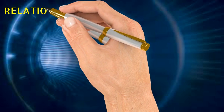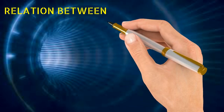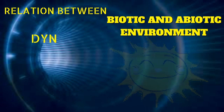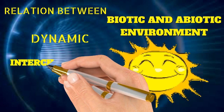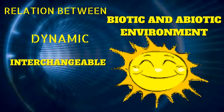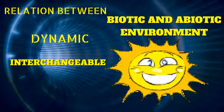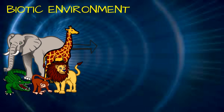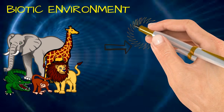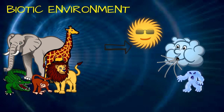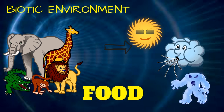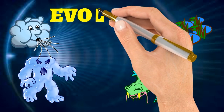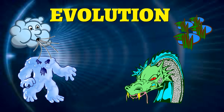Let's discuss the relation between biotic and abiotic environment. They are dynamic in nature and interchangeable, and Mr. Sun is the major solar energy source. Biotic environment depends on abiotic environment for food. Biotic environment also affects the abiotic environment and helps in the evolution of new species.